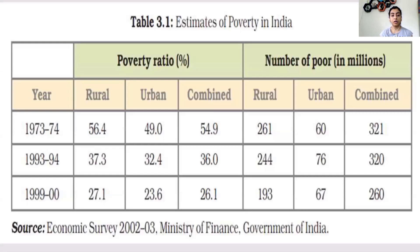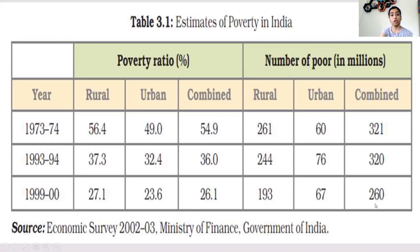Now coming to the estimates of poverty in India. In your book, there are tables which show how poverty looks in India. From 1973 to 74, in rural areas, you can see there were 321 million people under poverty. By 1993 to 94, it had only reduced to about 320 million. But by 1999 to 2000, it has reduced further — efforts have been made by the government to bring a reduction in the level of poverty. By 1999 to 2000, the poverty level came below 260 million, but still 260 million is not a small number. This survey is from the Economic Survey 2002-2003 report by the Ministry of Finance.